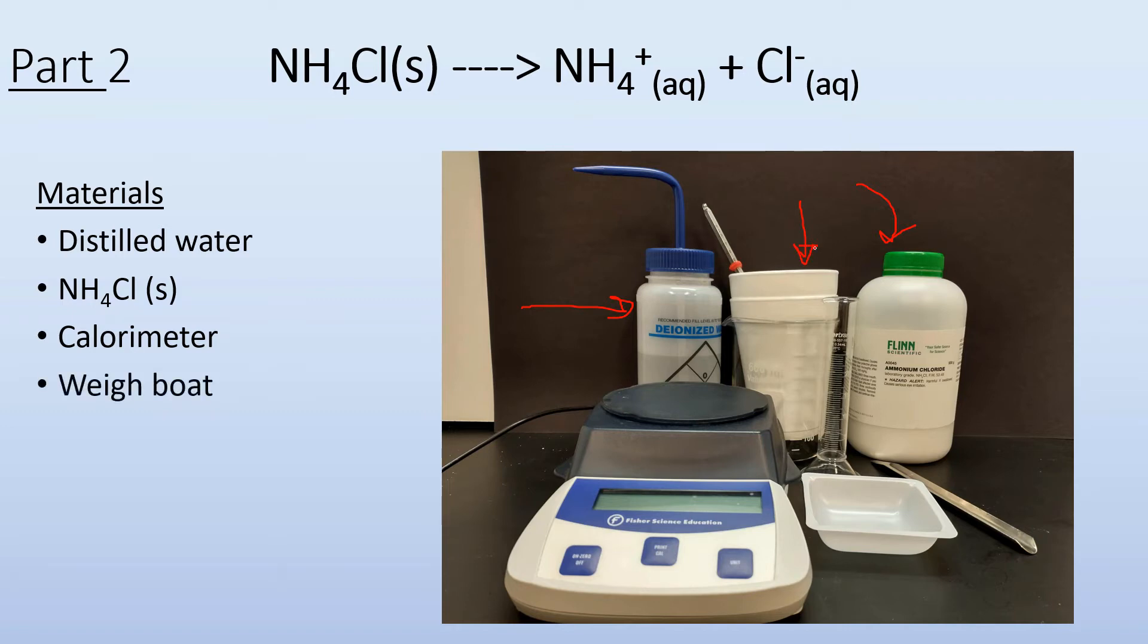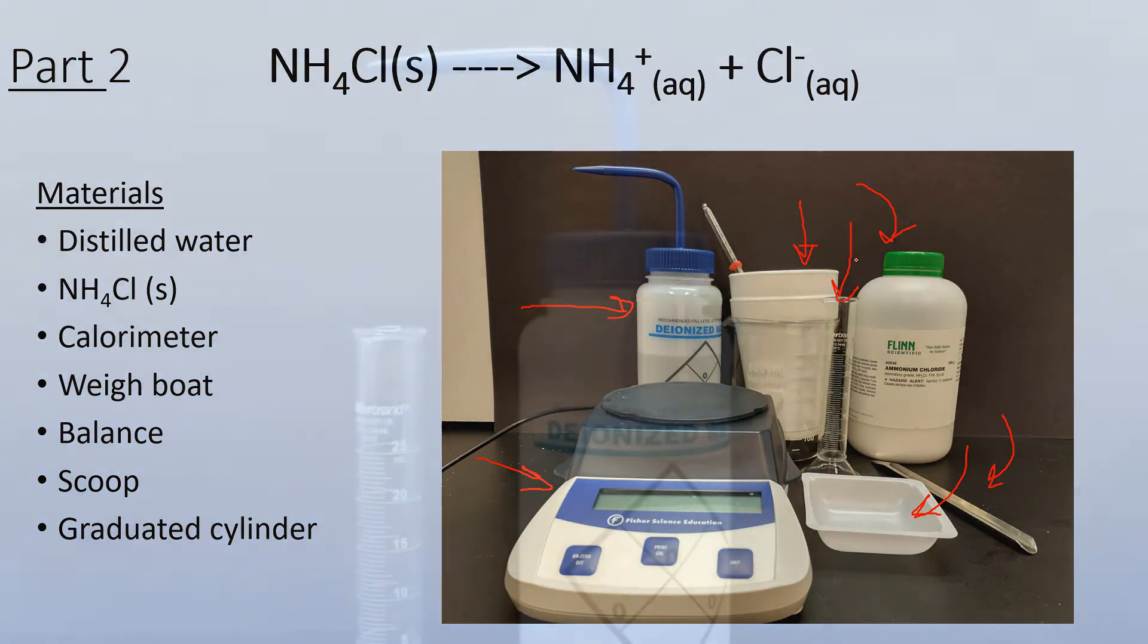A weigh boat so I can scoop out my ammonium chloride into something workable, a balance to measure out the specific mass of the ammonium chloride, and a scoop to scoop it out. And then I almost forgot, last but not least, the graduated cylinder so I can measure out a specific volume of water. So that's all I'm going to need for this part.